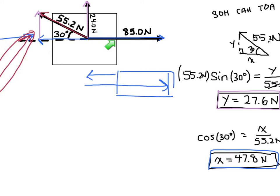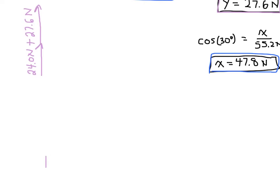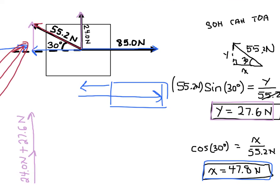Starting with the y-vectors: I have the first y vector of 24 newtons, and I add the y component I just solved for, 27.6 newtons. That gives a total of 51.6 newtons. For the x-vectors, I have 85 newtons in one direction and the 47.8 newtons I solved for going in the opposite direction.